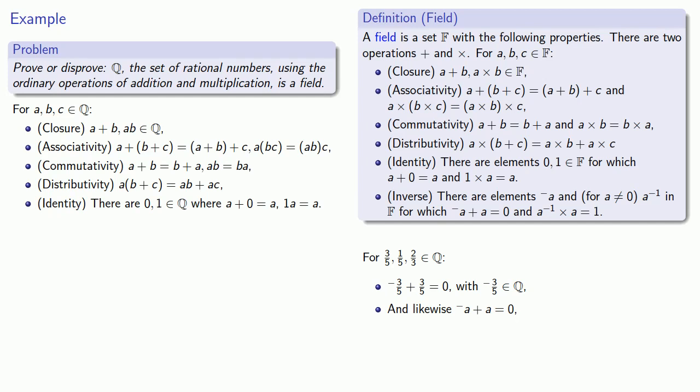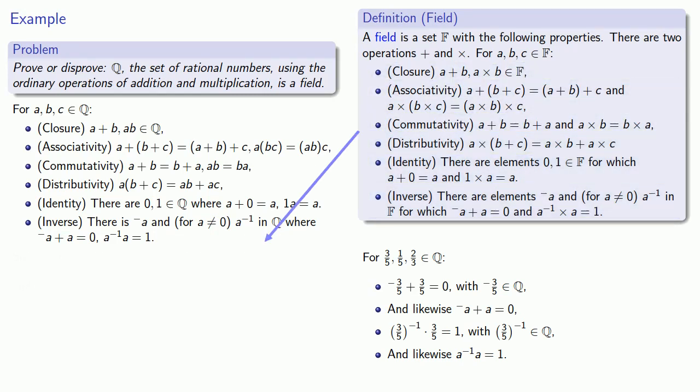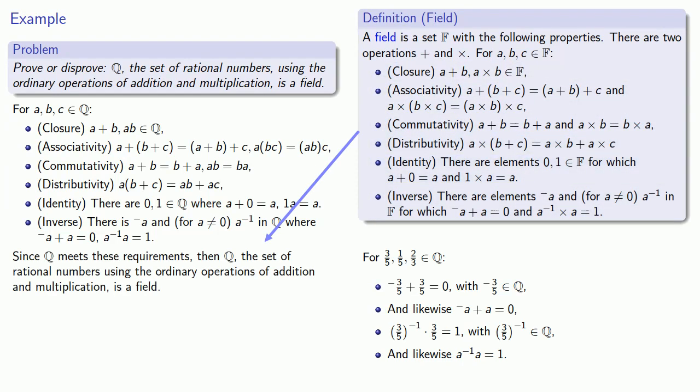And likewise, we'll try to find the multiplicative inverse of three-fifths. And the multiplicative inverse of three-fifths is five-thirds. And that is a rational number. And more generally, any multiplicative inverse will exist and also be an element of our set. And since our set Q meets all of these requirements, then the set Q of rational numbers using ordinary addition and multiplication is a field.